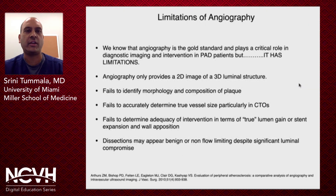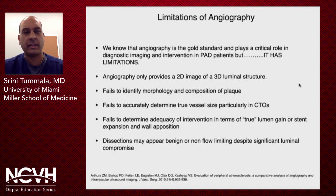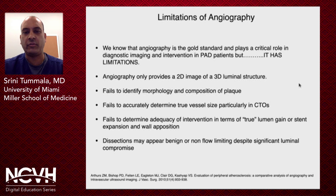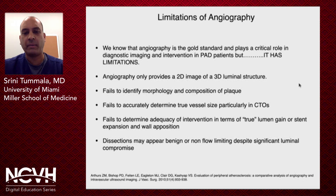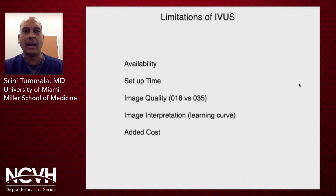What are the limitations of angiography? Angiography is really the gold standard and plays a critical role when it comes to imaging as well as guidance during intervention, but it does have limitations. Angiography provides a 2D image of a 3D luminal structure. It fails to identify morphology and composition of plaque, fails to accurately determine true vessel size particularly in CTOs, fails to determine adequacy of intervention in terms of true lumen gain or stent expansion and wall apposition post-therapy, and dissections may appear benign or non-flow limiting despite significant luminal compromise.